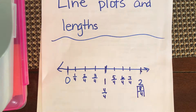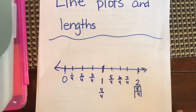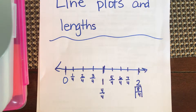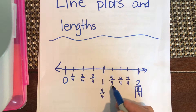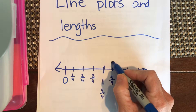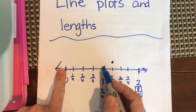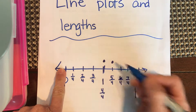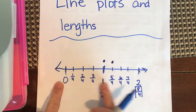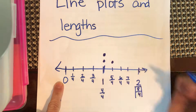What we're doing is called line plots. Let's say I measured five pencils. The first pencil was five-fourths of an inch long, so I make a dot. The second pencil was exactly one inch, and the third pencil was also exactly one inch.